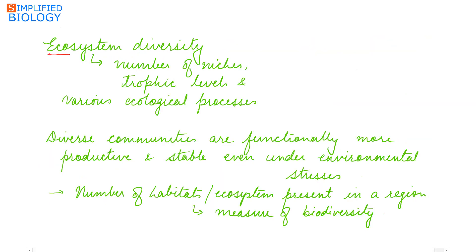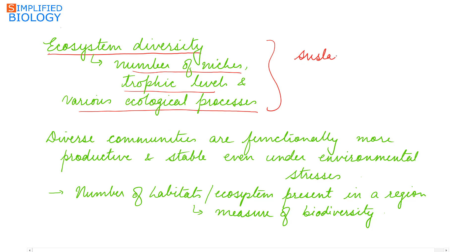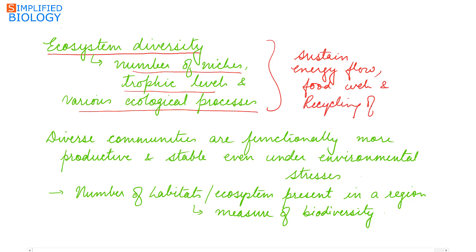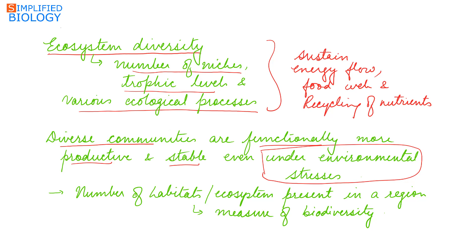Ecosystem diversity includes the number of niches, trophic levels, and the various ecological processes that sustain energy flow, food webs, and recycling of nutrients. The greater the diversity, the more productive and the more stable are the communities. Diverse communities are functionally more productive and stable, even under environmental stresses.